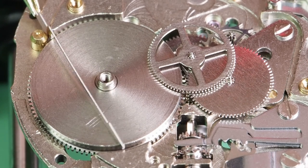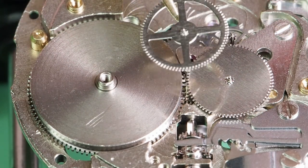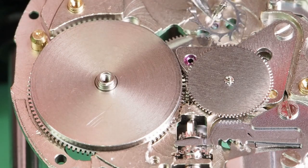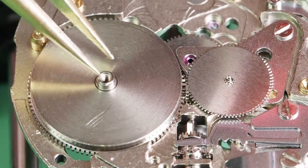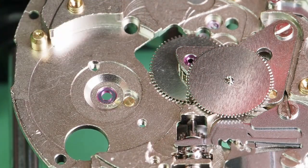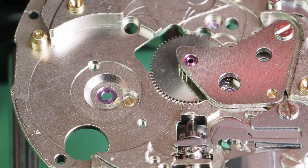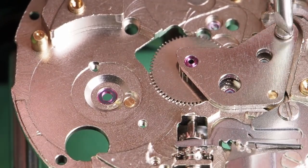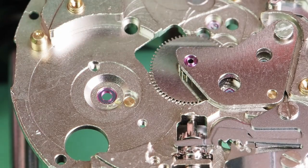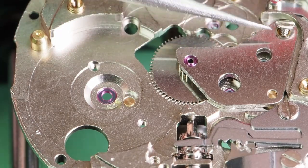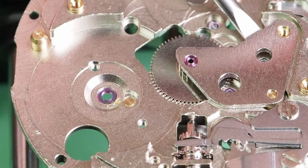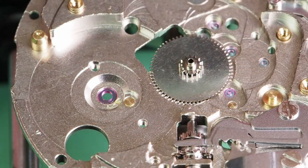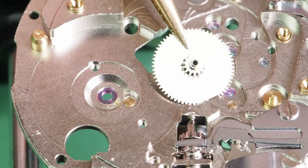The click can be removed now. The fourth wheel. The escape wheel. The third wheel. The center wheel bridge is secured with one screw which can be removed now. I'm lifting the bridge slightly with my screwdriver here. And now I can use brass tweezers to lift it. And finally the center wheel.